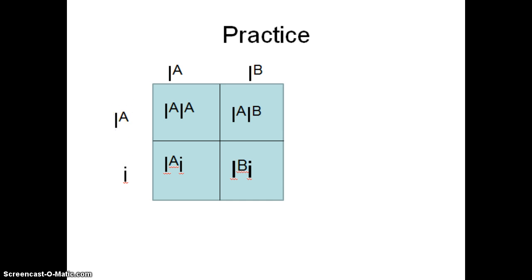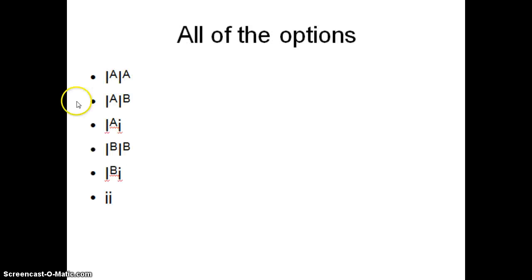If I go back to our different options, this person would be homozygous A. This person is AB. This person is heterozygous A. Homozygous B. Heterozygous B. And plain O.